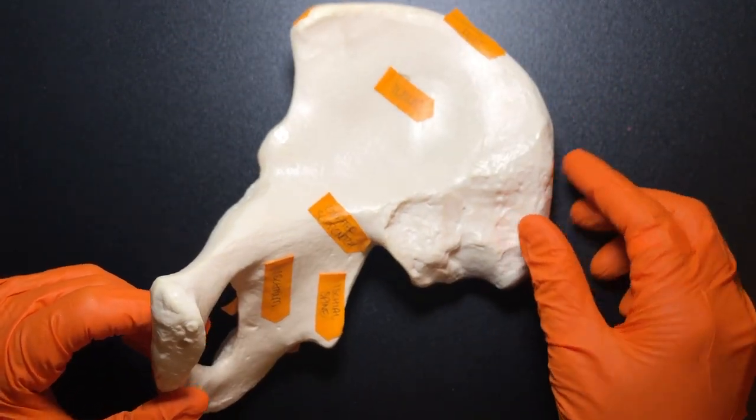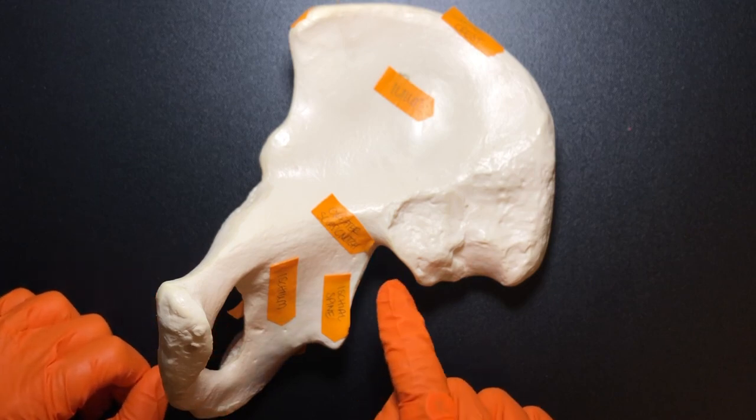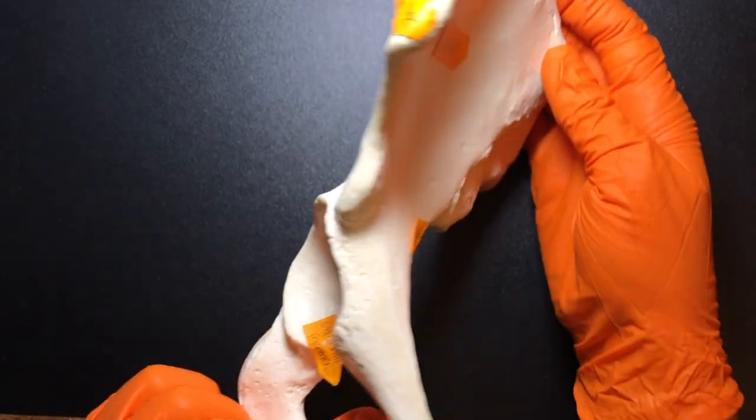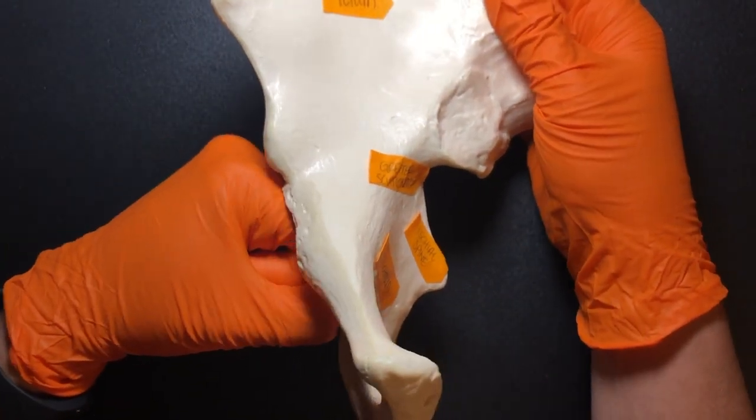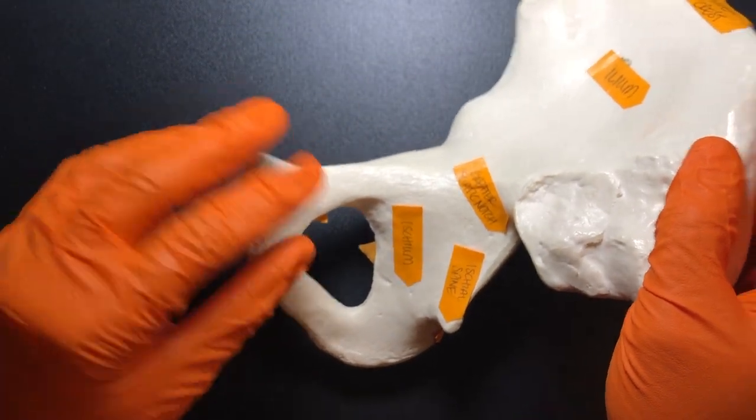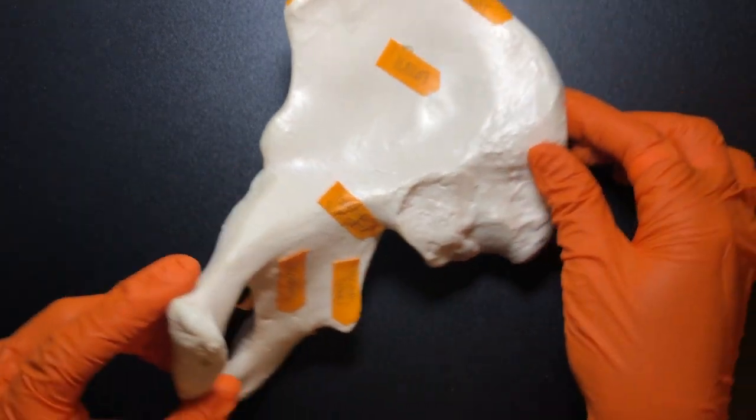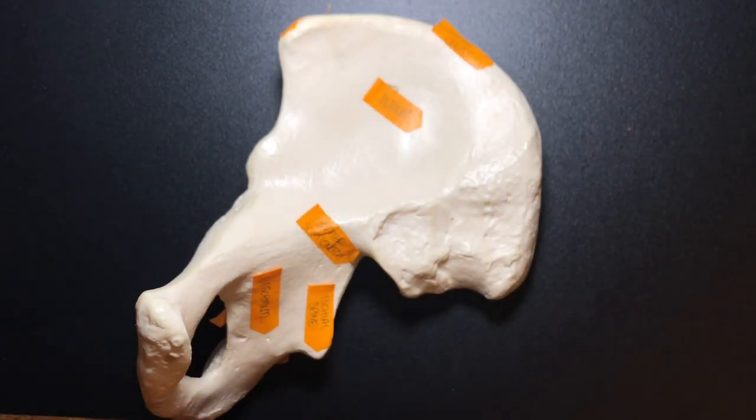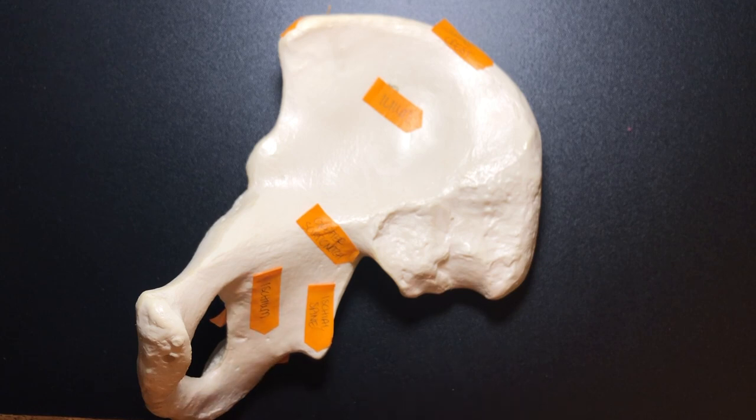So to help you distinguish left and right, this greater sciatic notch is going to be medial. The acetabulum is lateral. And that makes sense because that femur is going to go into it just like so. And then if you remember that the pubis is kind of where your pubic bone is, it's the most anterior, then looking at it like this, you can very easily tell that this is the right coxal bone.